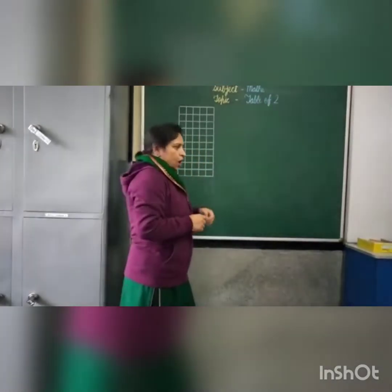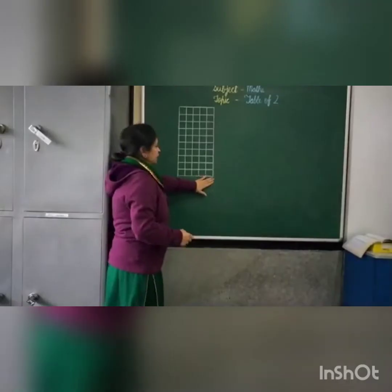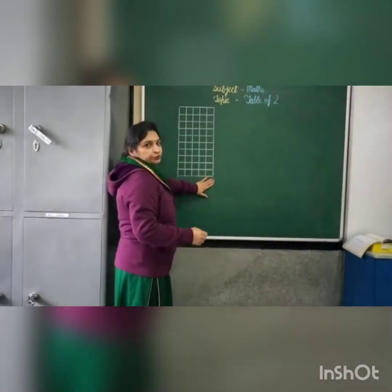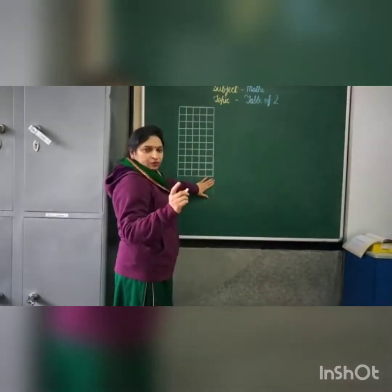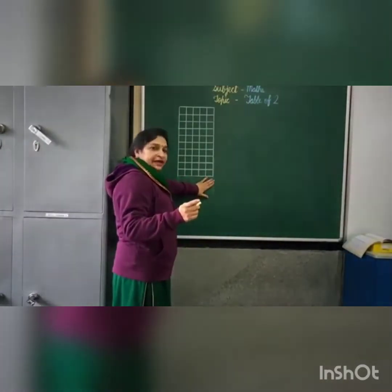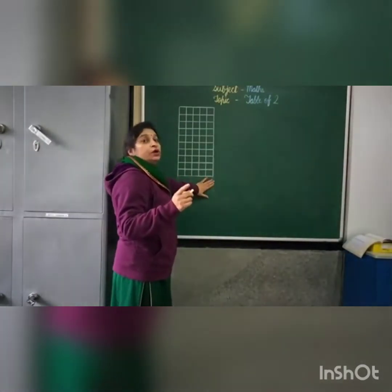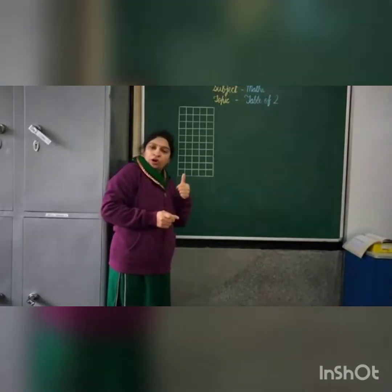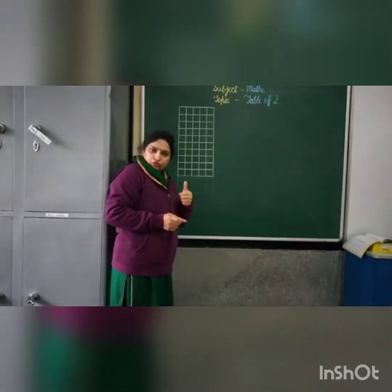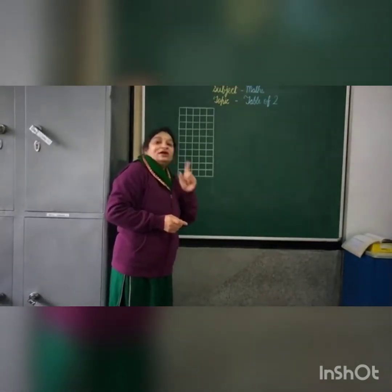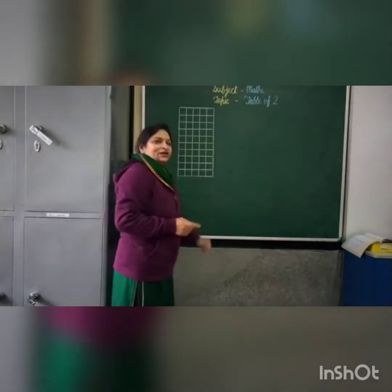Okay children, now we start the table of 2. All of you take out your pencils. All of you follow the class golden rule. Which rule? Speak and rhyme.